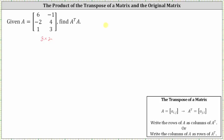We begin by determining A transpose. To determine A transpose, we can either write the rows of A as the columns of A transpose, or we can write the columns of A as the rows of A transpose. Since matrix A is a three by two matrix, A transpose is going to be a two by three matrix with two rows and three columns. Let's find A transpose by writing the columns of matrix A as the rows of A transpose.